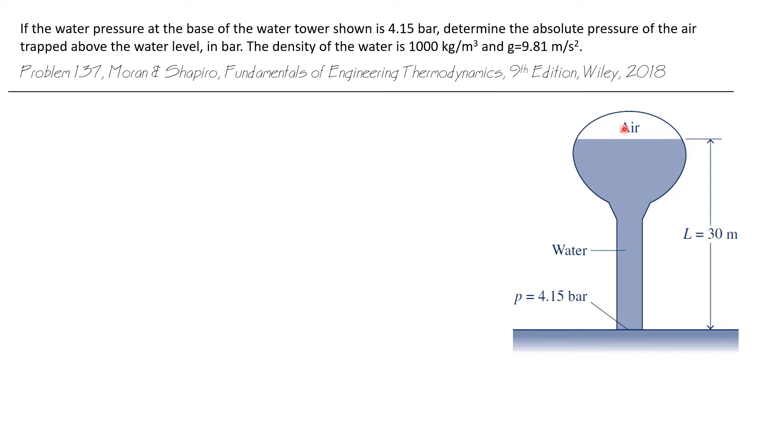We want to find that in bar. We're given that the density of water is 1000 kilograms per cubic meter, and the acceleration of gravity is 9.81 meters per second squared.